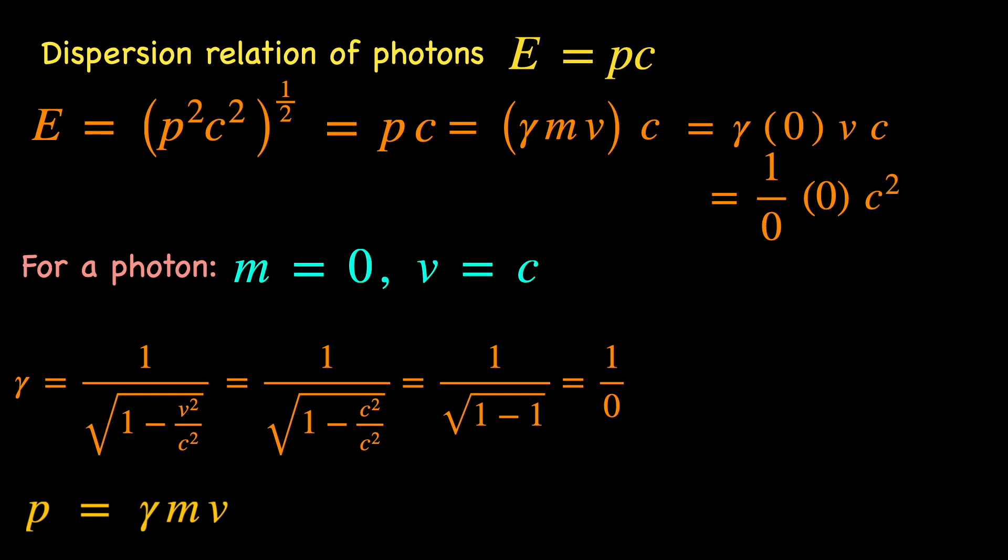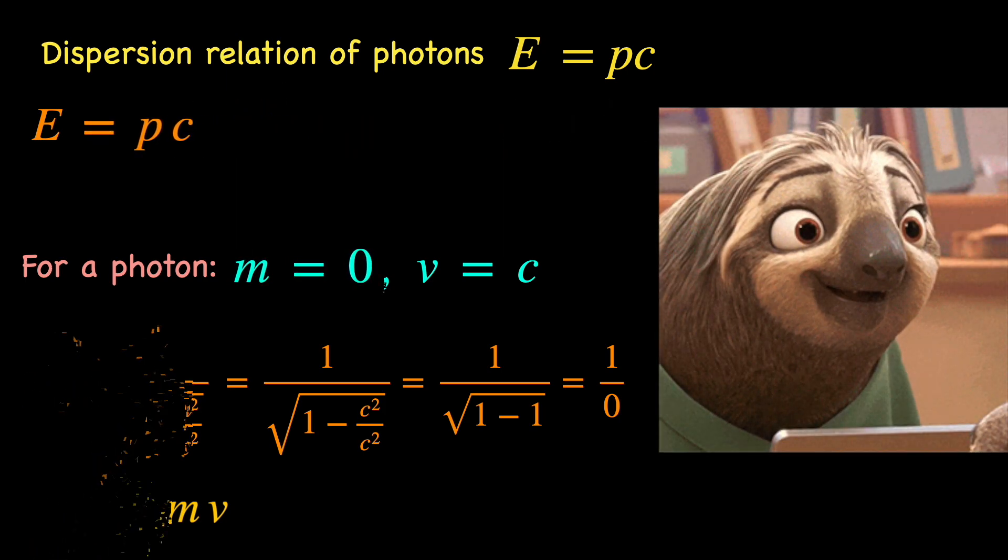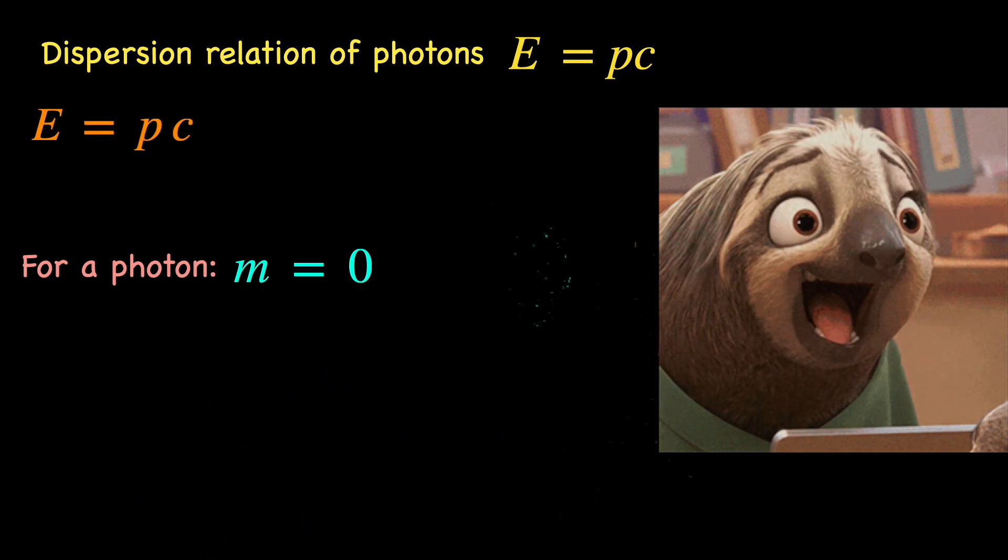So, according to the massive relativistic dispersion relation, the photon energy should become 0 divided by 0 times c squared. To get the claimed E equals pc obeyed by a photon, we put m equals 0 but then very conveniently forget that p is supposed to be gamma mv.